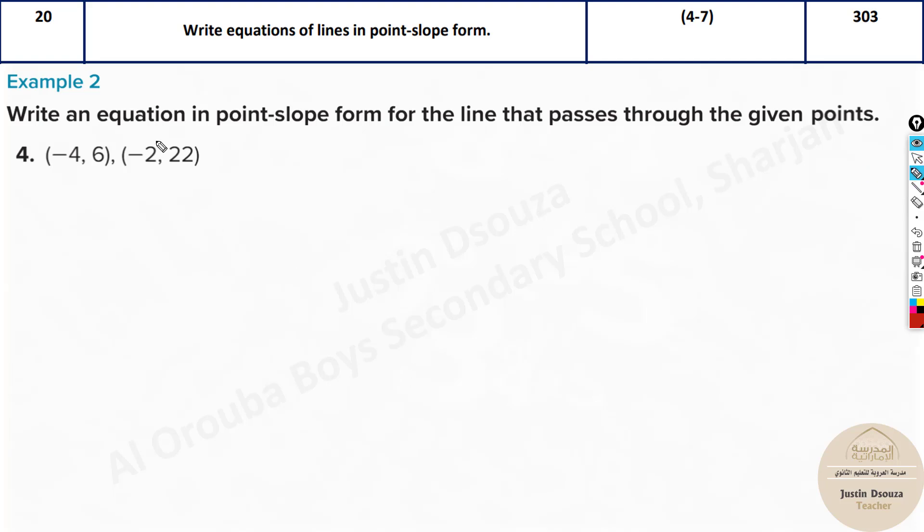For point-slope form they will give you two points: x1 y1 and x2 y2. You can even interchange these, you can take the second point as x1 y1 and first point as x2 y2, you will get the same answer. But let's go in order, first one as x1 y1, second one as x2 y2.